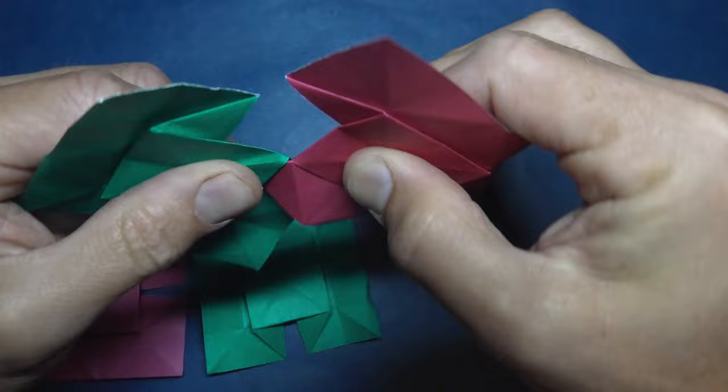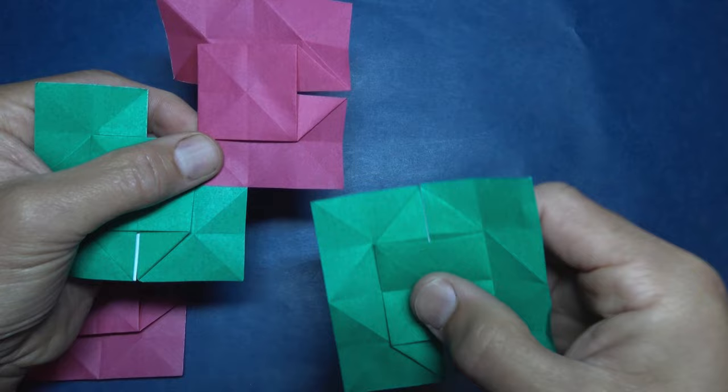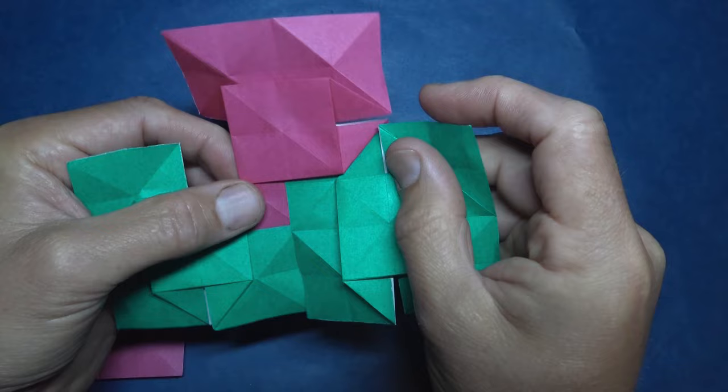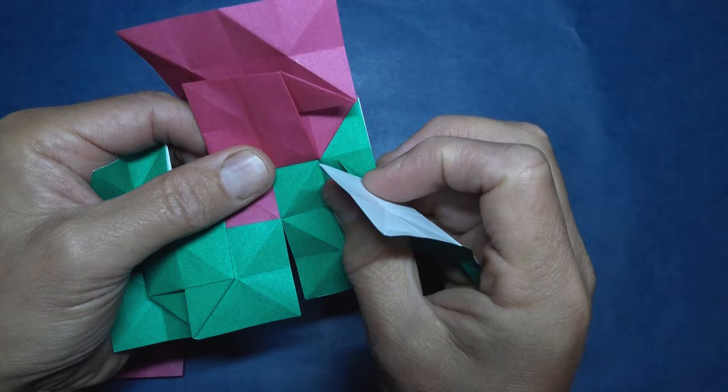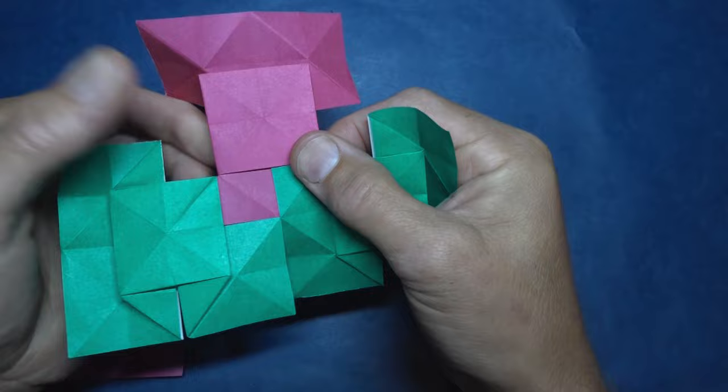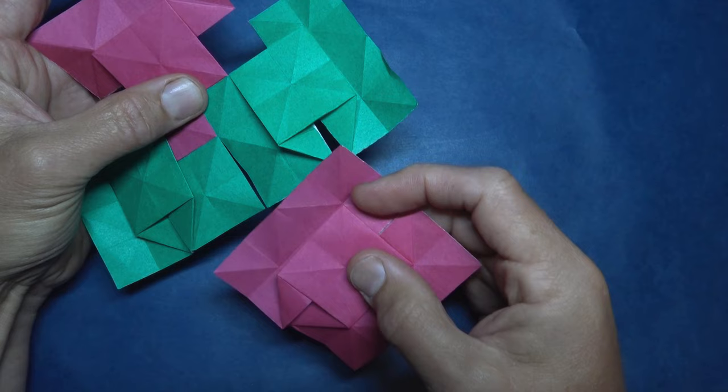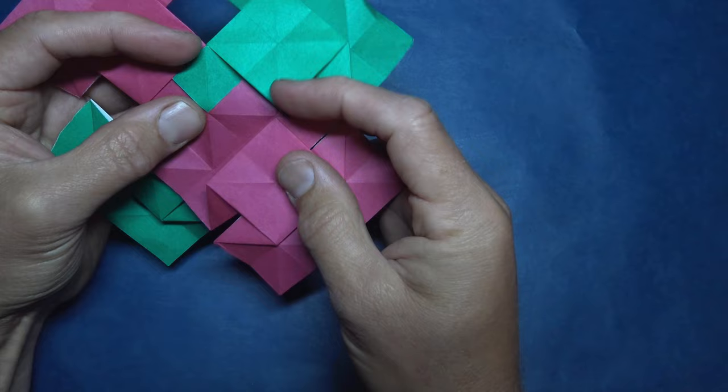Now get your next unit. And this one, it goes in like this. And once again, to lock it, you take this flap and you fold it behind. And the last one, insert it like this. And lock it.